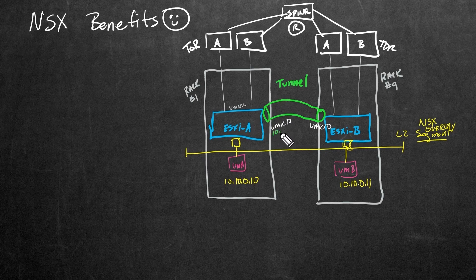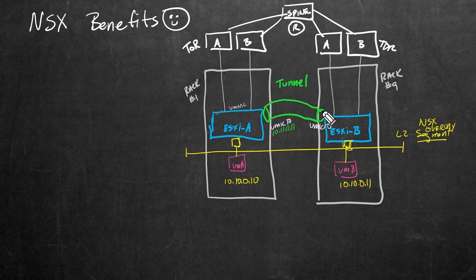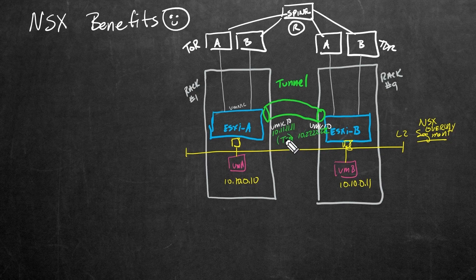Over here at ESXi B, for its VMkernel 10 adapter acting as the tunnel endpoint on this side, maybe it's using 10.22.22.22. TEP is an acronym for tunnel endpoint. Think of it like a VM kernel adapter with an IP address representing one end of the tunnel on ESXi A and the other end over at ESXi B.